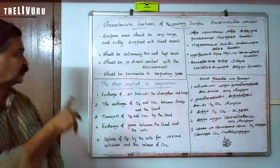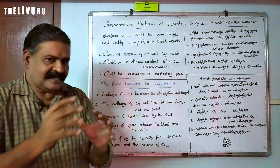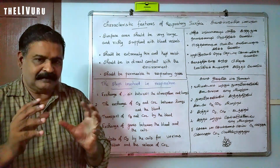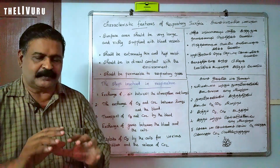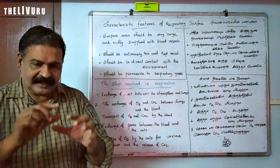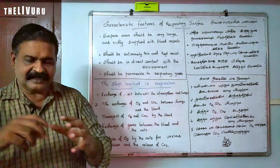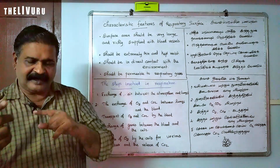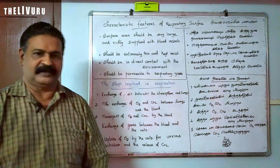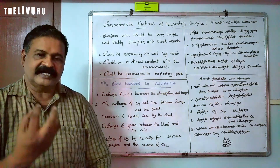That's the first characteristic. Second one: the respiratory surface should be extremely thin. The capillaries are very thin, that's why there is efficient exchange of oxygen and carbon dioxide. The surface should be very thin and moist.